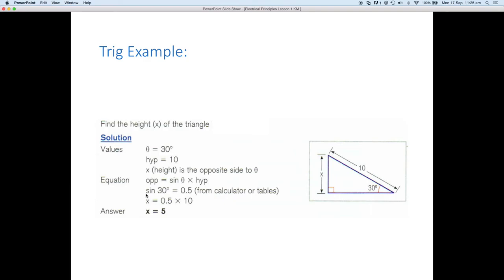So, the equation is the opposite equals the sine of the angle multiplied by the hypotenuse. So, we simply put in sine 30 degrees is equal to 0.5, either from our calculator or our tables. So, 0.5 times 10 gives us 5. Of course, on your calculator, you'll be able to put that straight in, sine theta multiplied by 10, and it will come back with the answer 5. I'd suggest you pause the video here and just make sure you can do a few of those trigonometrical functions.